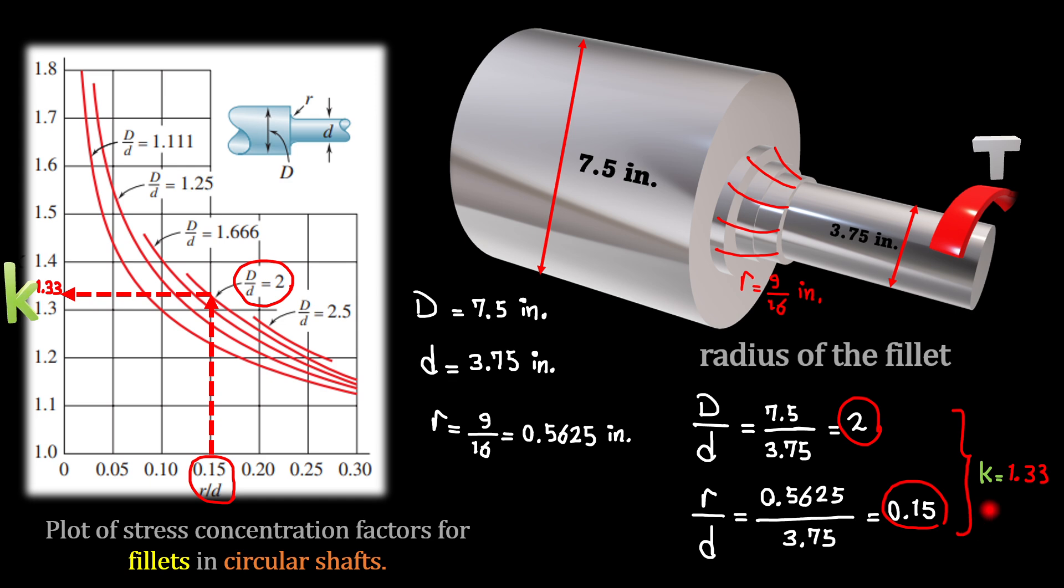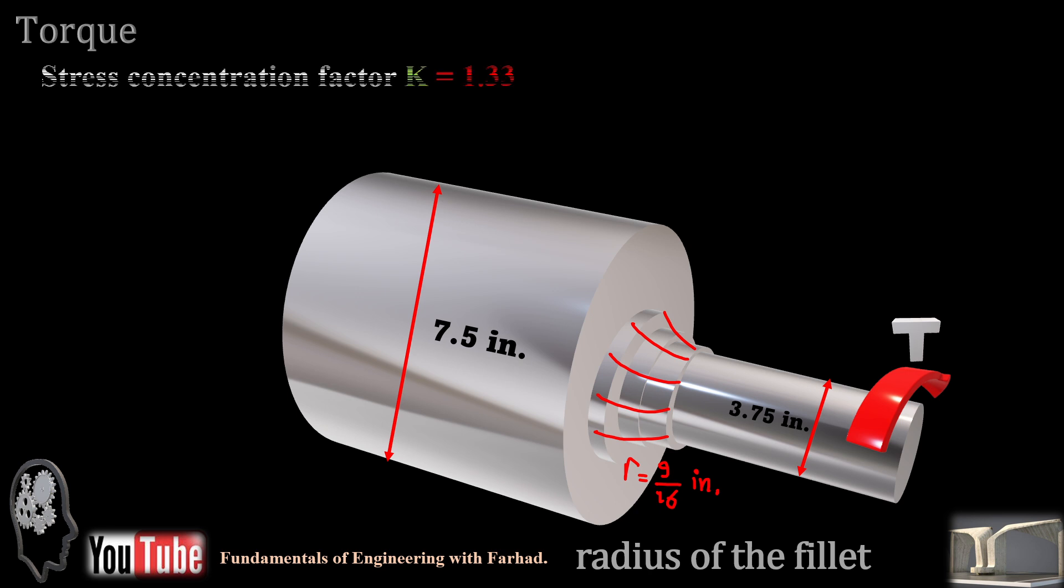That's our stress concentration factor due to this table for a fillet circular shaft. As soon as we have a stress concentration factor, we can calculate the torsional torque which applies here. Then tau maximum is K times Tc over J. And for having tau maximum, we need the minimum J,